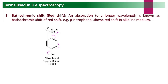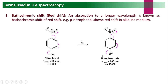Para-nitrophenol absorbs at 255 nm because of extended resonance — the OH group has a +R effect donating electrons to the benzene ring, while the nitro group has a −R effect accepting those pi electrons. In alkaline conditions, the acidic proton of the phenol is abstracted and a phenoxide ion (nitro-phenoxide) forms, which carries an extra negative charge providing even stronger +R effect.